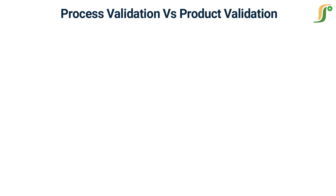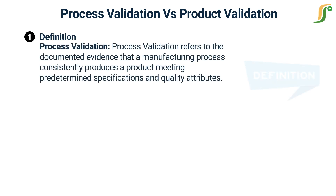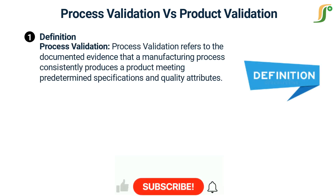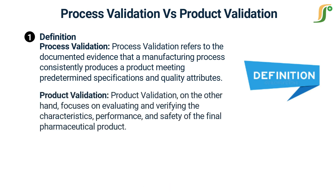Definition: Process validation refers to the documented evidence that a manufacturing process consistently produces a product meeting predetermined specifications and quality attributes. Product validation, on the other hand, focuses on evaluating and verifying the characteristics, performance, and safety of the final pharmaceutical product.